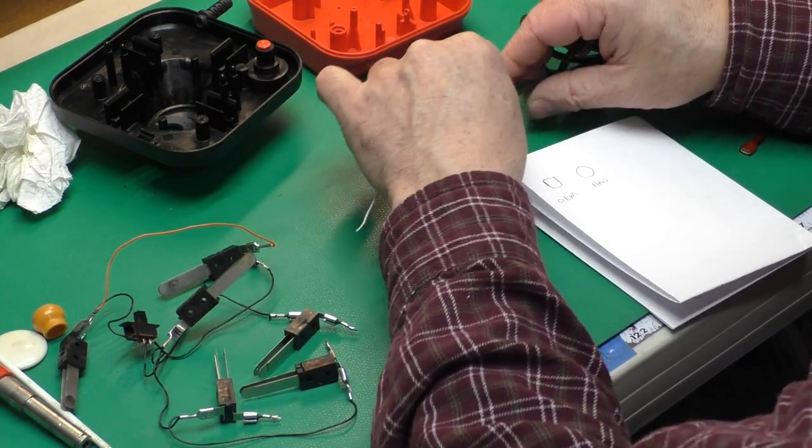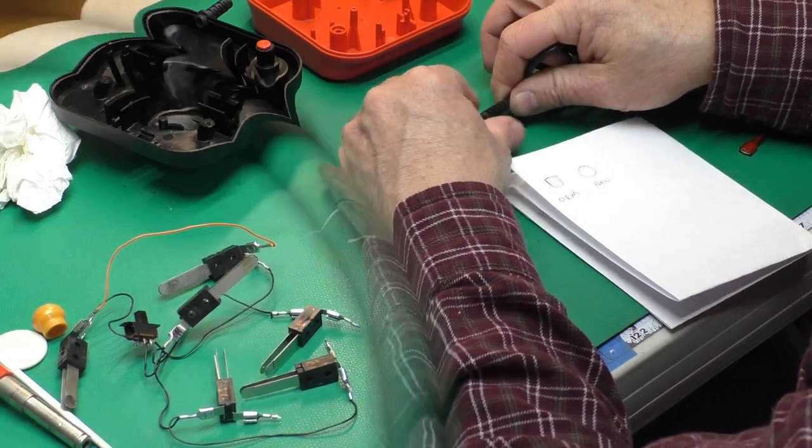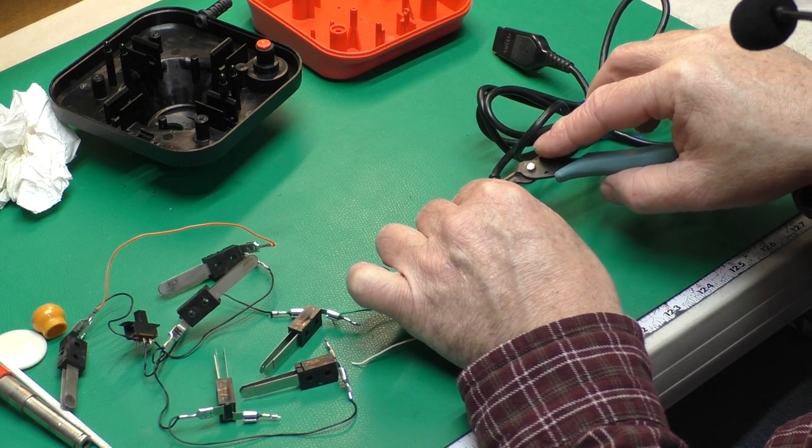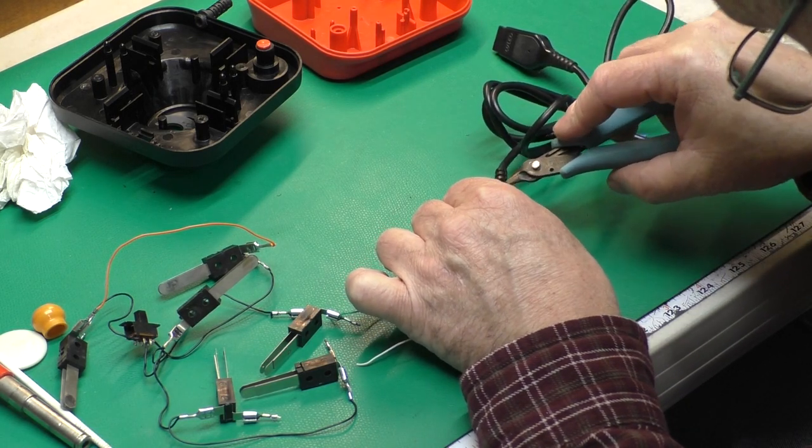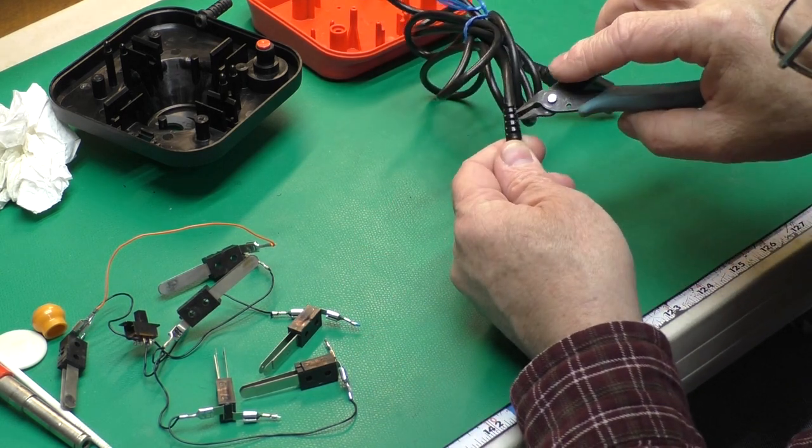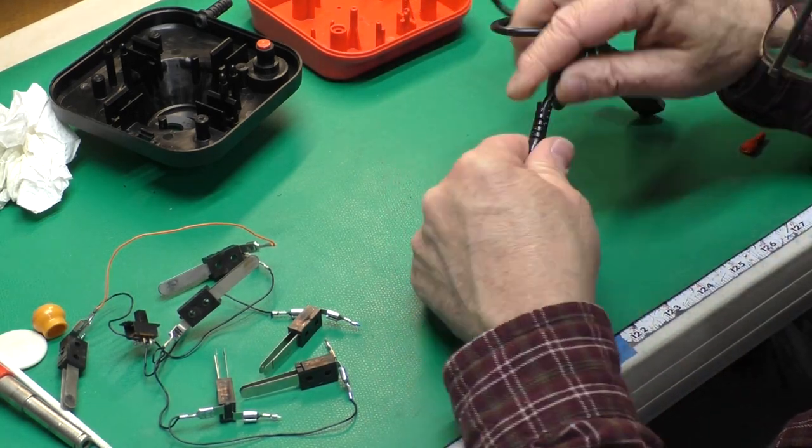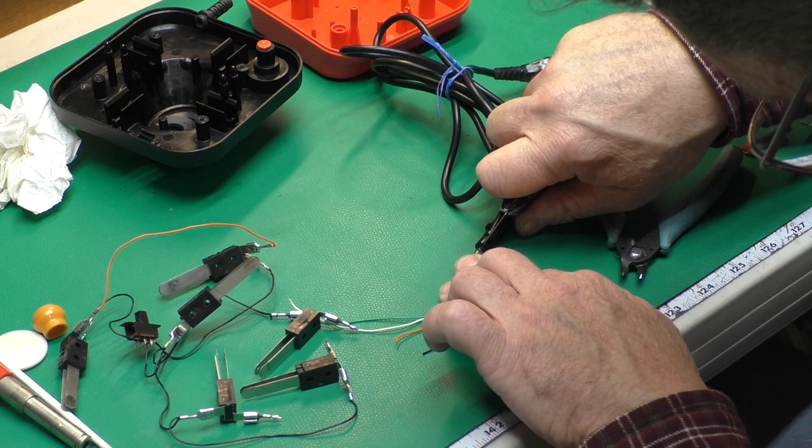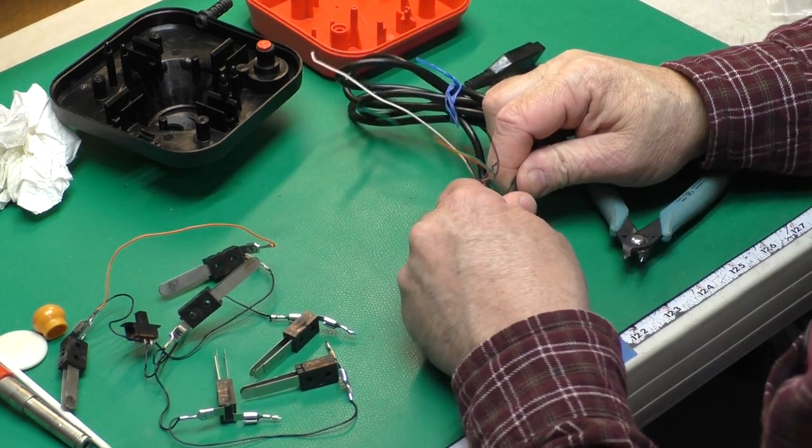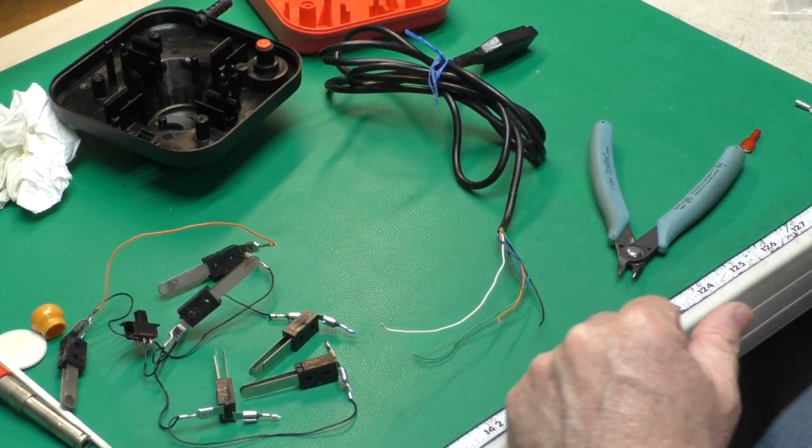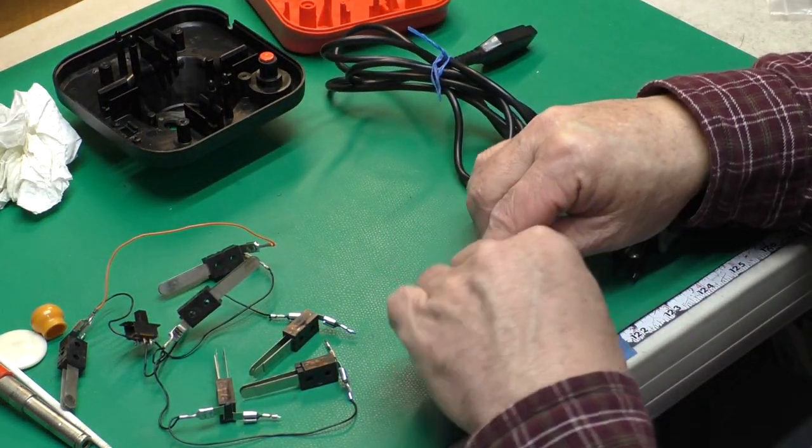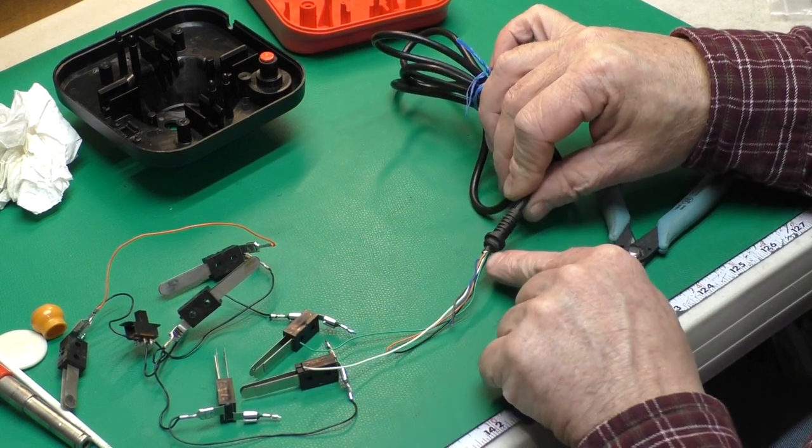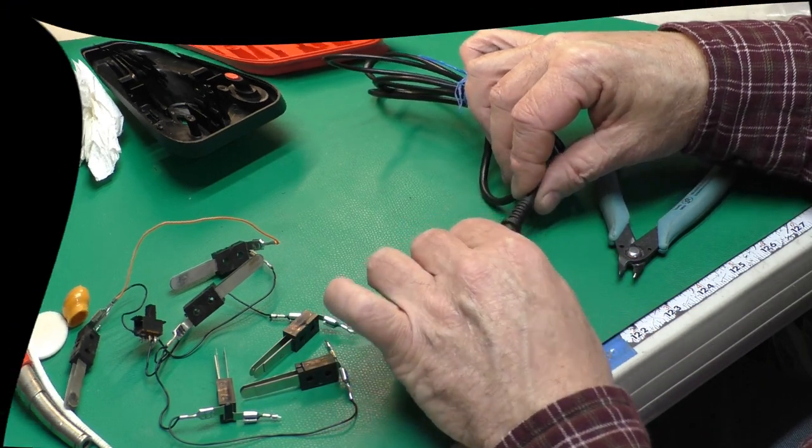I'm going to straighten all those up like so. Now we have to get this old strain relief off of here. It doesn't seem to want to budge, it's just wiggling. So I'll cut each of these ribs very carefully. I'll do this last big part with the knife here. I'm trying not to actually get into the jacket of the cable. There we go. Here are the new ones. And that fits very nicely. So we have a little of the jacket sticking out like so.